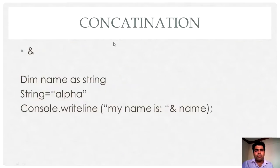Now the fourth category of operator and very important operator in VB.NET is the concatenation operator. This operator is used to combine two different strings into a single one. For example, let's suppose there is a variable name as string. Now I have initialized the variable string as alpha.